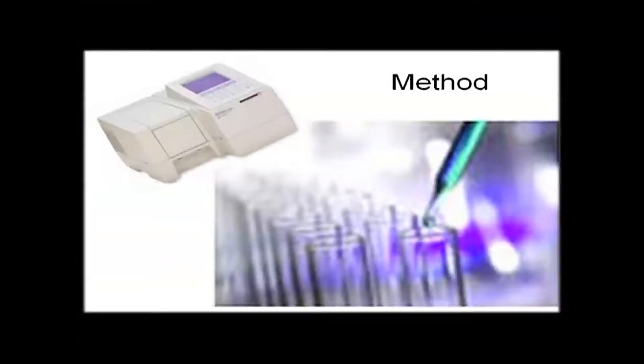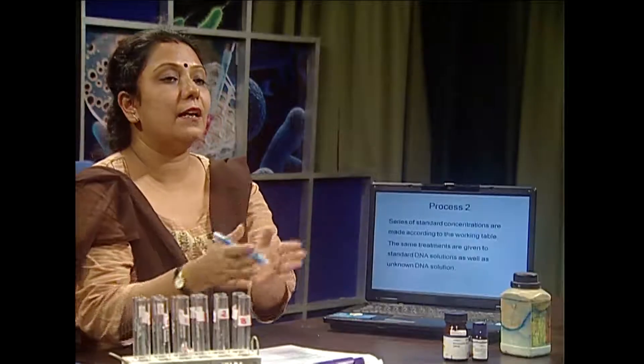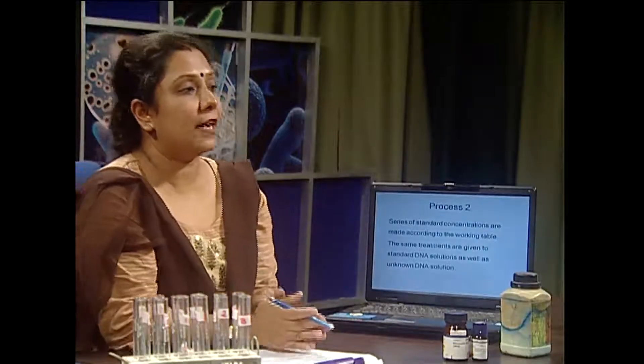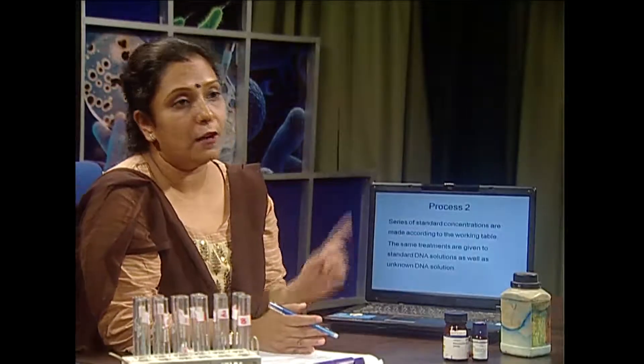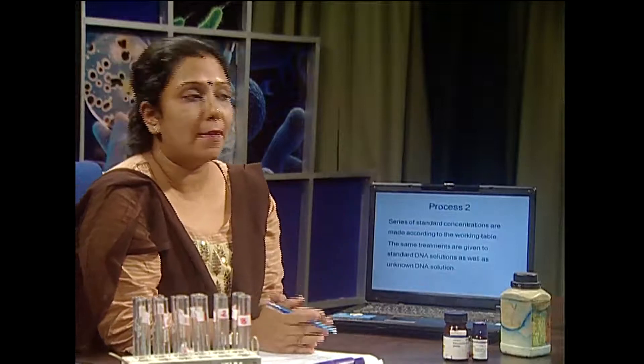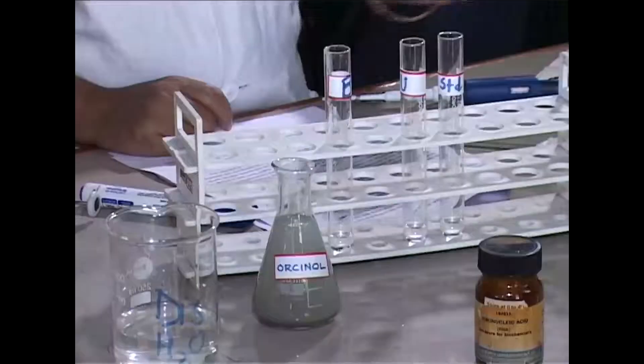In process 1, just one gross standard can be made and compared with the unknown one. In process 2, you can make a series of RNA concentrations from the master stock — maybe 2 mg per mL or 0.2 mg per mL.